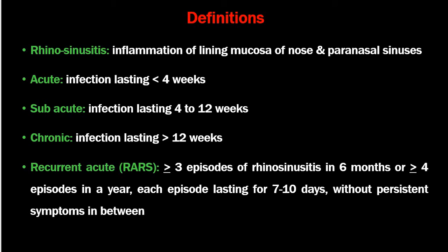Chronic rhinosinusitis is defined as infection lasting for more than 12 weeks, or more than three months duration. Recurrent acute rhinosinusitis is defined as more than three episodes in six months, or four or more episodes in a year, each episode lasting for 7 to 10 days, without persistent symptoms in between.